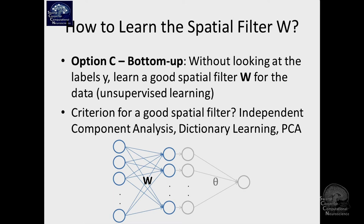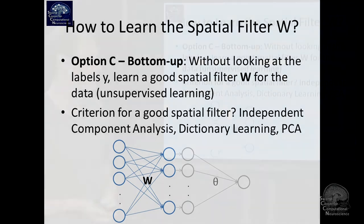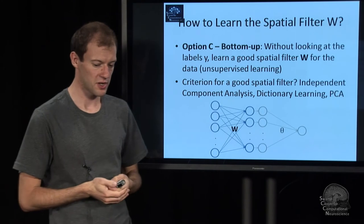So how might that work? So the idea is, well, maybe we can capture just the dominant structure in our data and find the dominant sources and find spatial filters to extract these dominant sources. And that's what independent component analysis does, what dictionary learning does, sparse coding, principal component analysis.